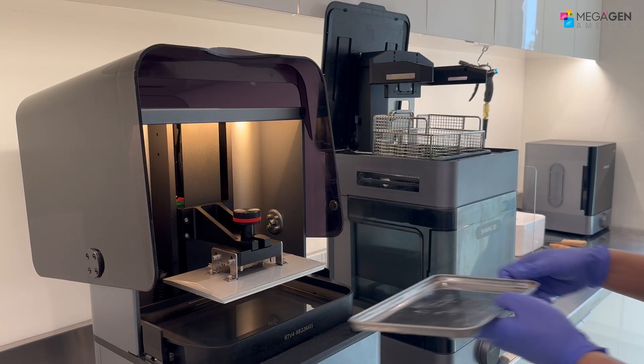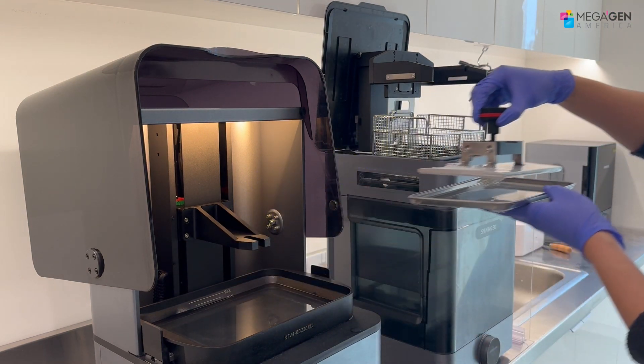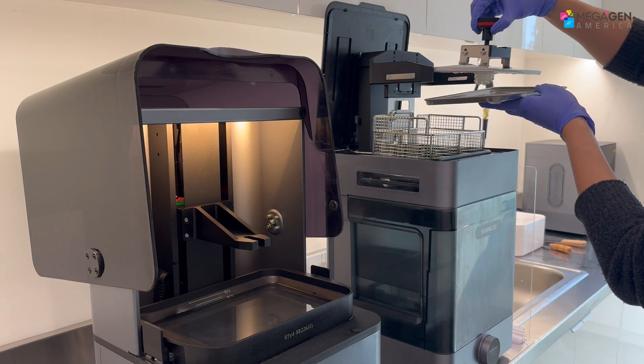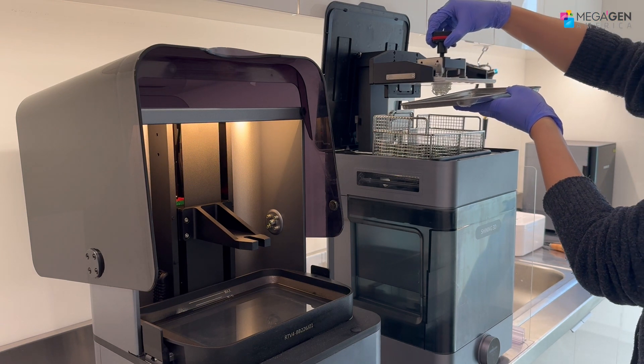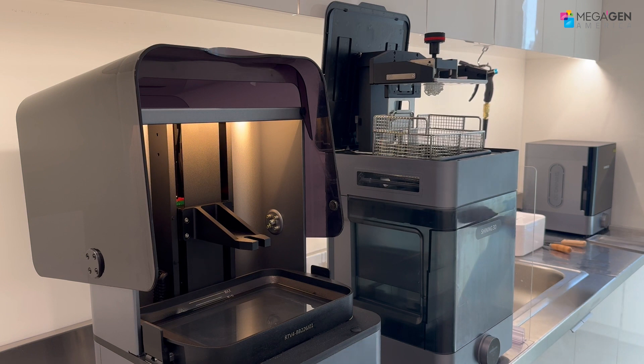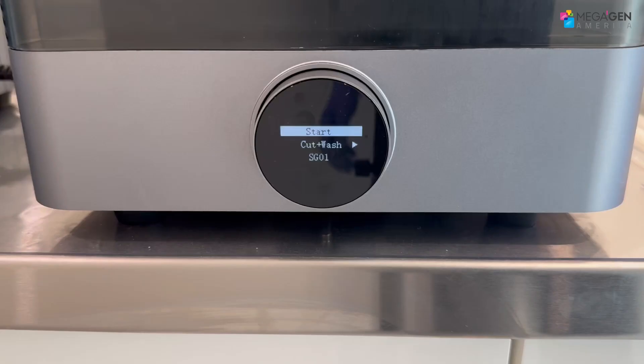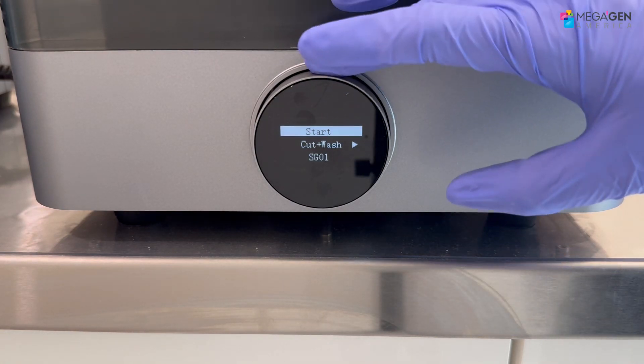The washer will automatically cut the guide and wash it. Other printers require you to scrape the model off the platform manually and that will get messy. Select the resin brand and type in the washer.